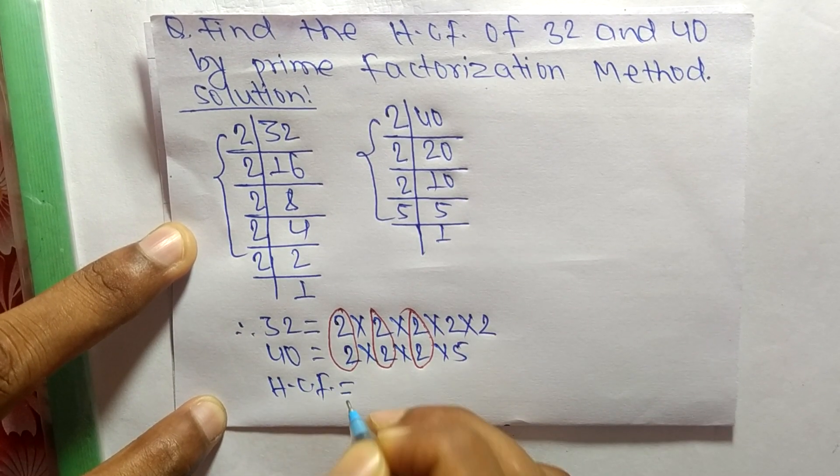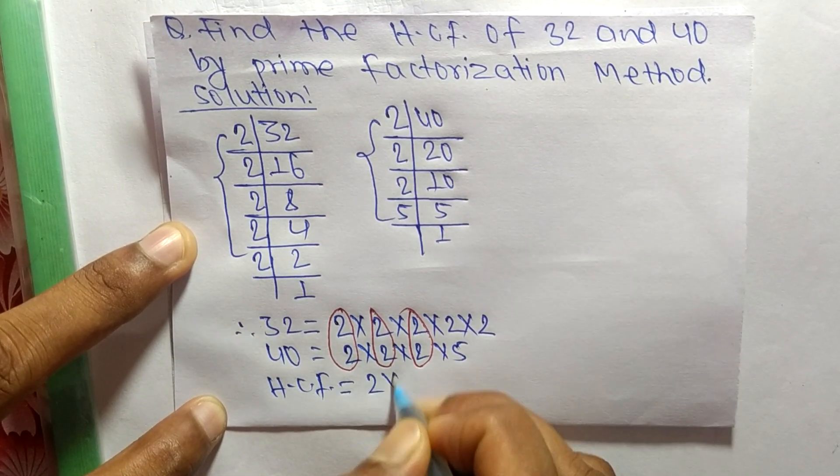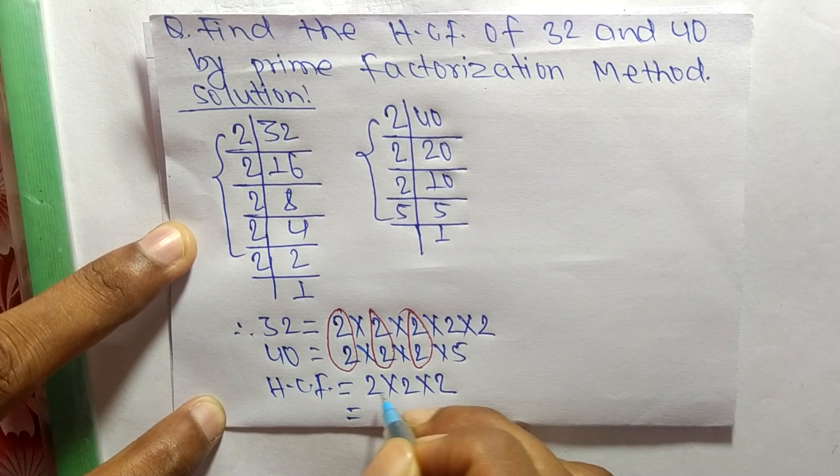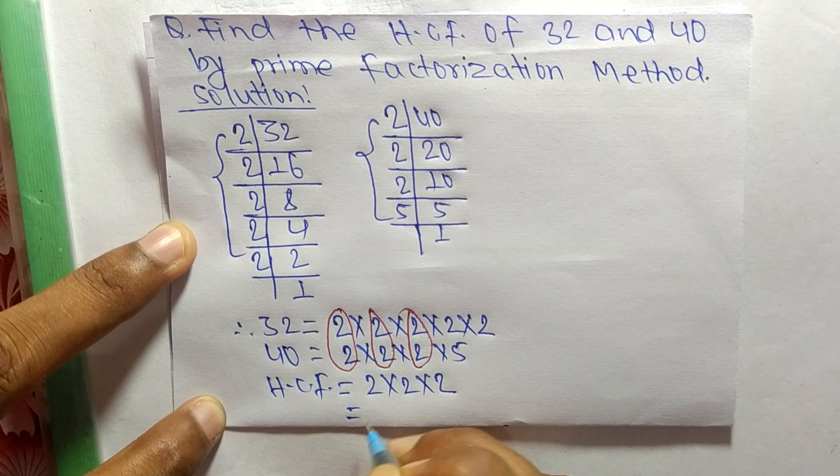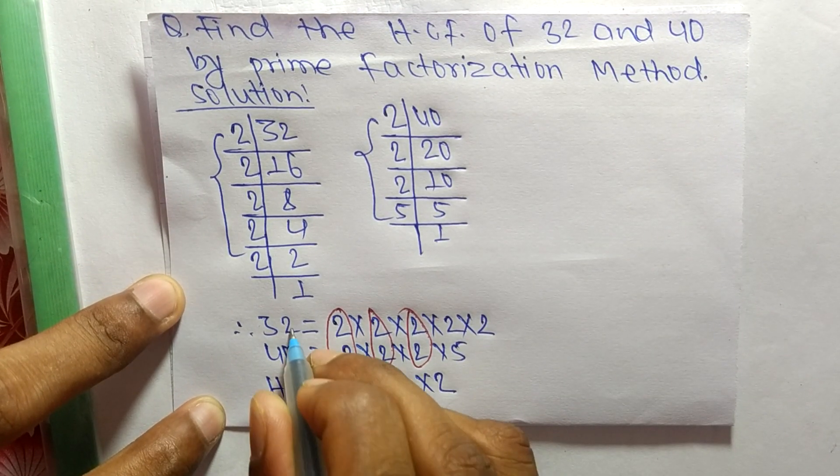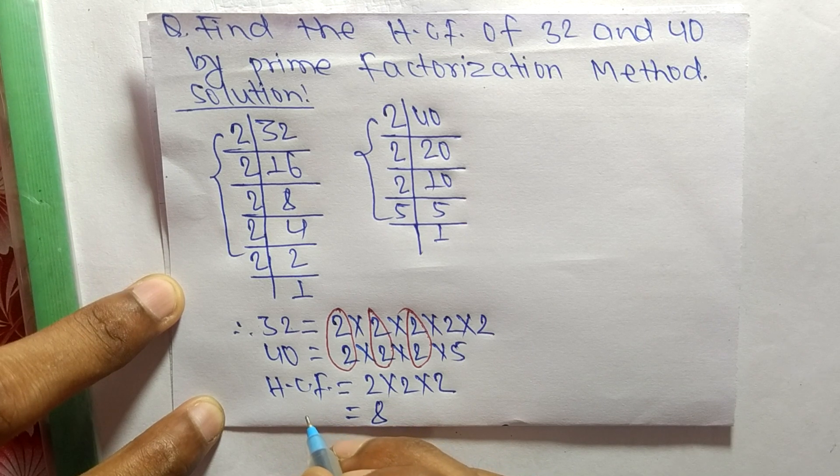The HCF equals these common factors: 2 times 2 times 2, which equals 4, and 4 times 2 equals 8. So 8 is the HCF of 32 and 40.